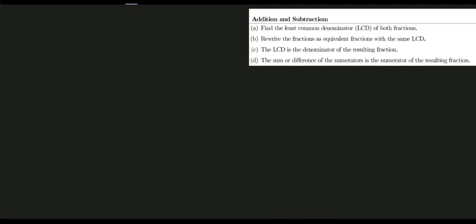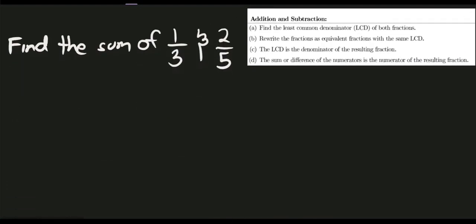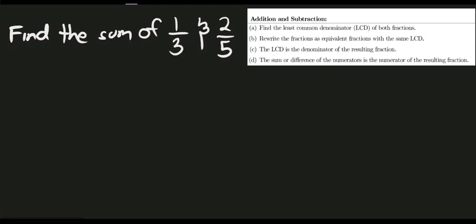Let's try to solve this given problem and apply the given steps or rules. We're asked to find the sum of one-third and two over five. So, step one, we need to identify the least common denominator of both fractions.